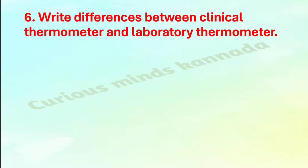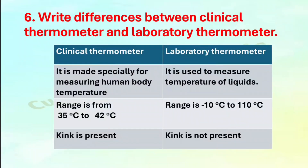Sixth: Write differences between clinical thermometer and laboratory thermometer. Clinical thermometer is made specially for measuring human body temperature; laboratory thermometer is used to measure temperature of liquids. Clinical thermometer range is 35°C to 42°C; laboratory thermometer range is minus 10°C to 110°C. Kink is present in clinical thermometer; kink is not present in laboratory thermometer.